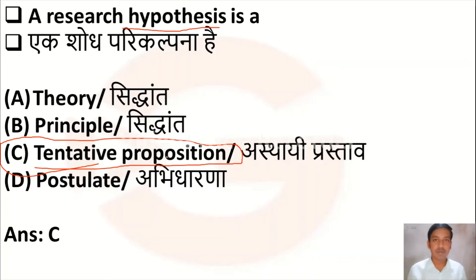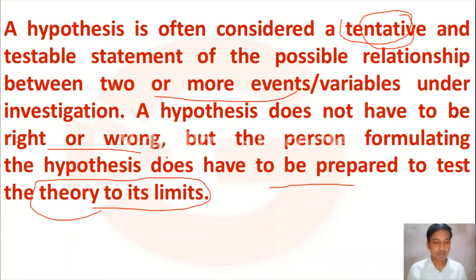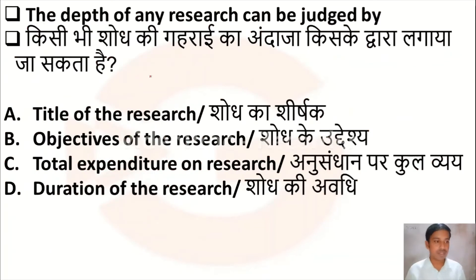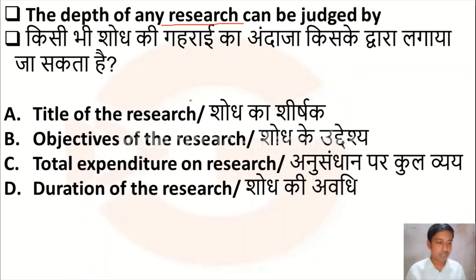The next question is: the depth of any research can be judged by — Option A: title of the research, Option B: objectives of the research, Option C: total expenditure on research, Option D: duration of the research.